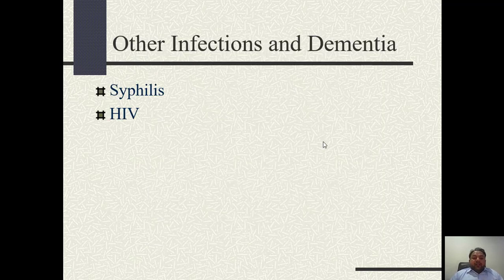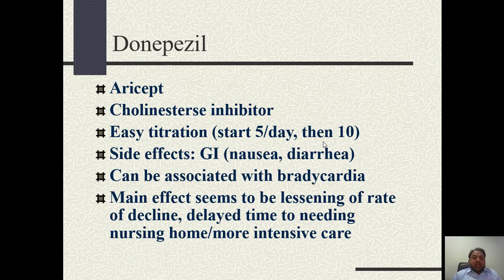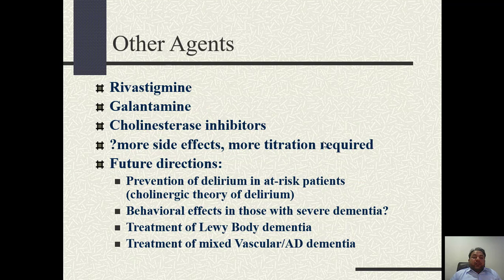Other infections like syphilis and HIV may lead to dementia. For the treatment of Alzheimer's disease dementia, there are two types of drugs approved by the FDA. Number one is cholinesterase inhibitors like donepezil, which comes in doses of 5 and 10 mg and may be easily titrated. Other cholinesterase inhibitors like rivastigmine and galantamine can also be used. These three drugs are recommended by the FDA in mild to moderate dementia.